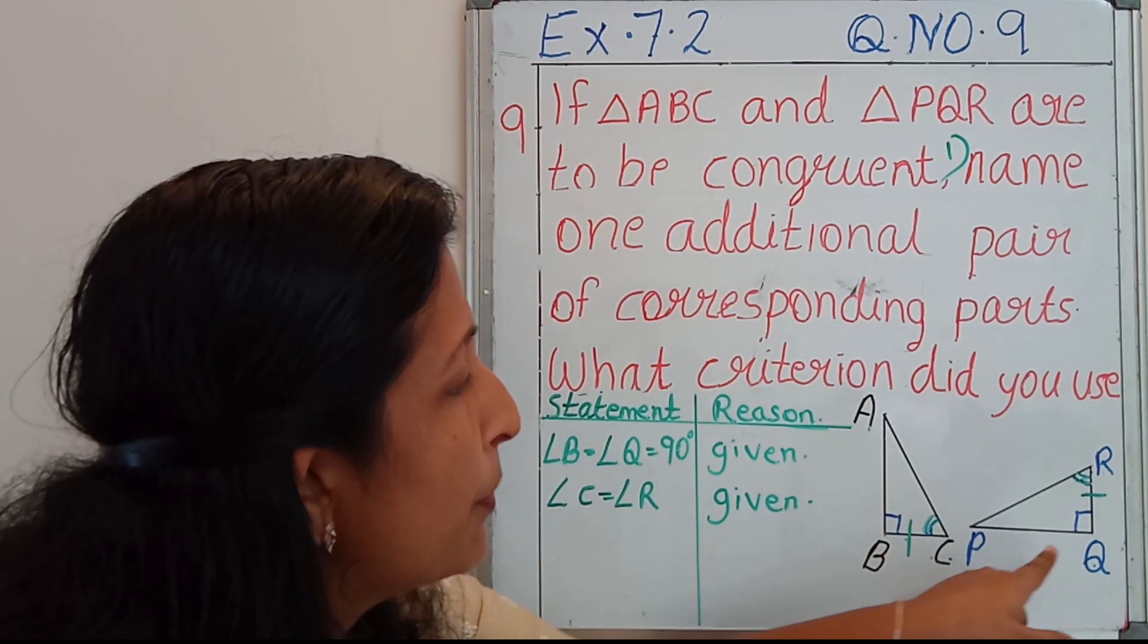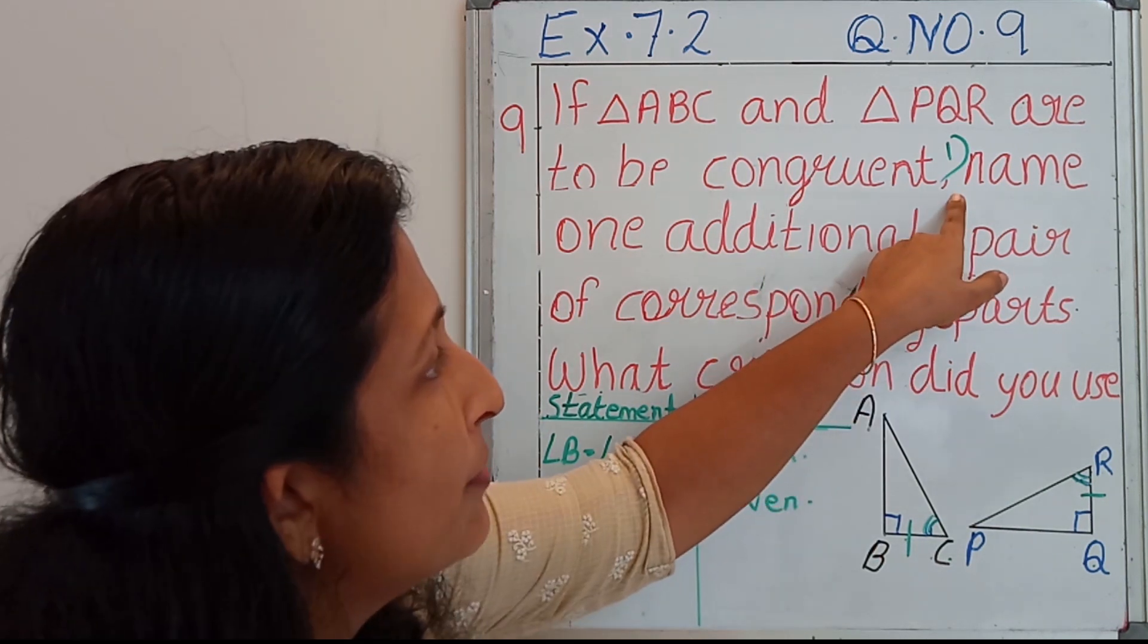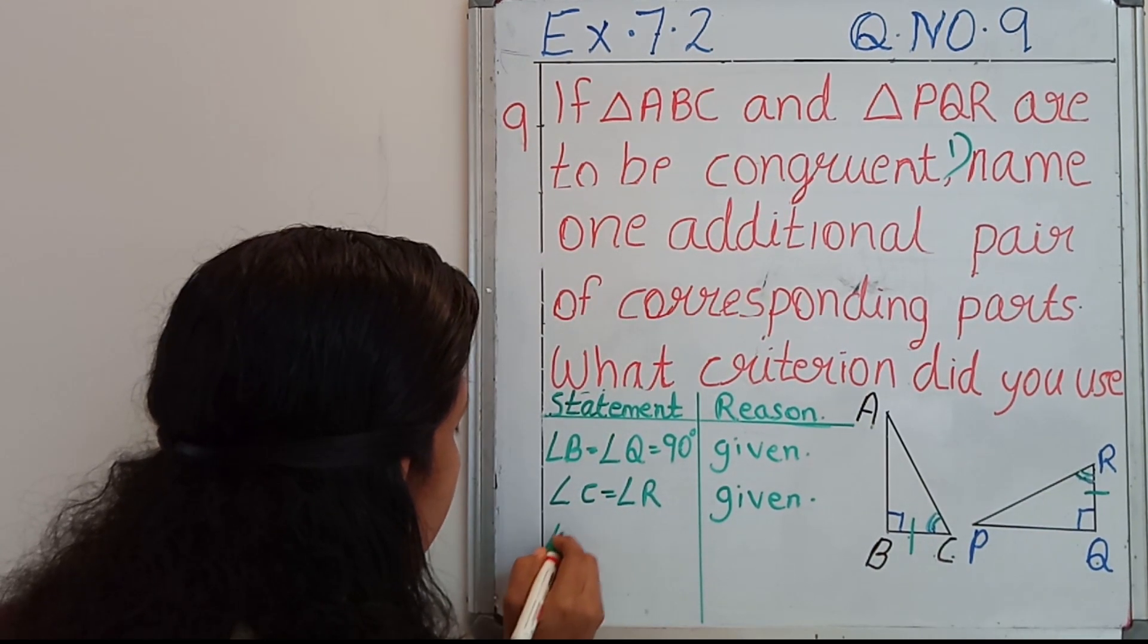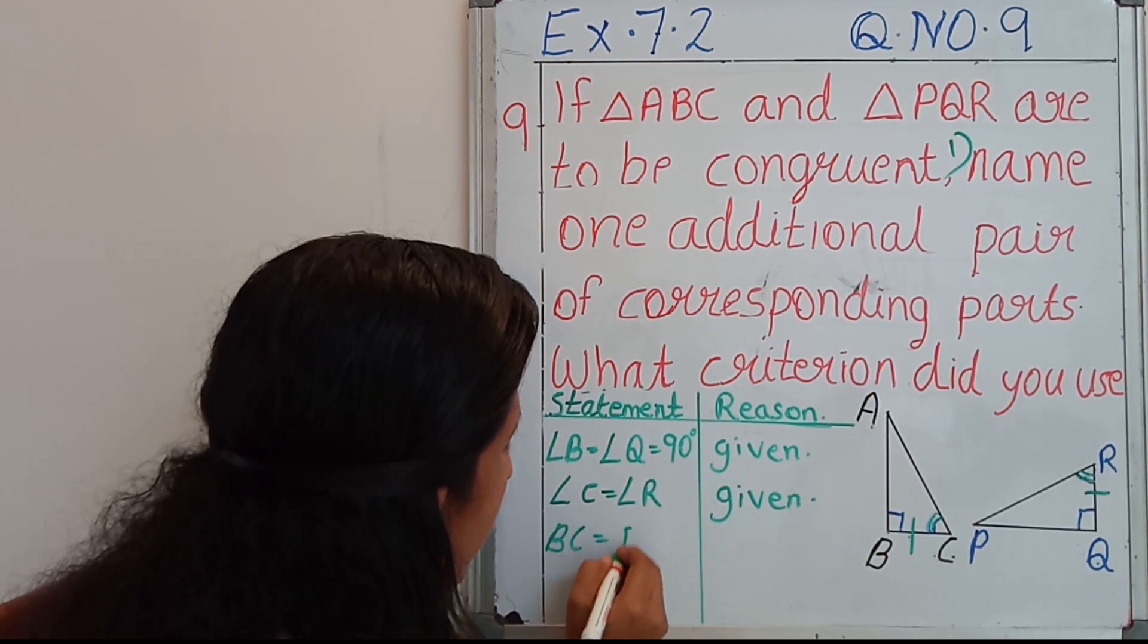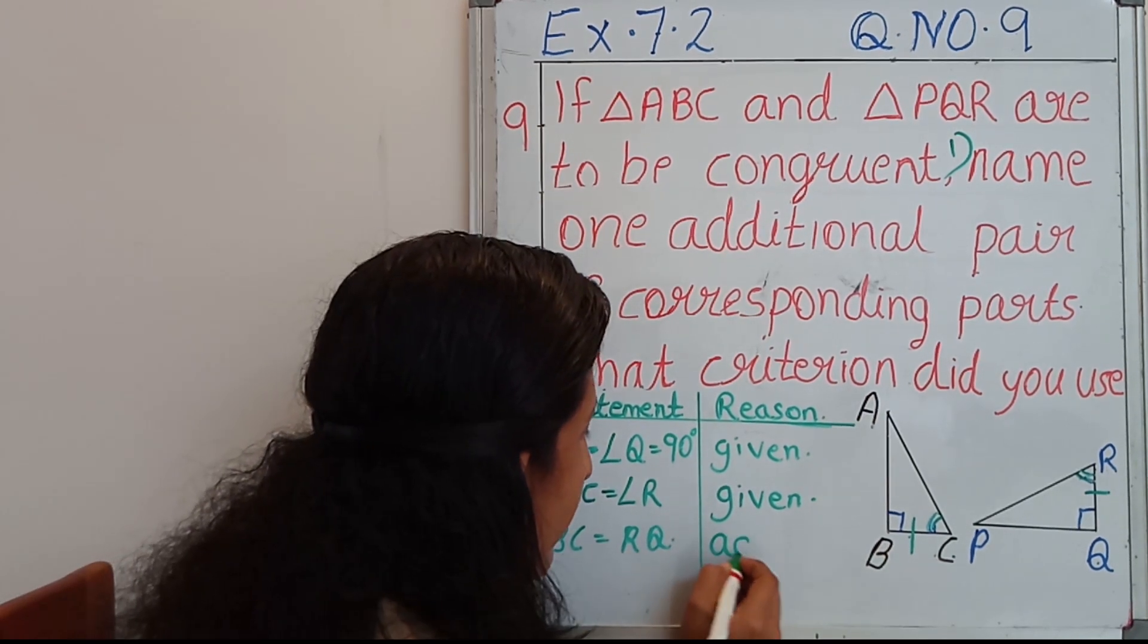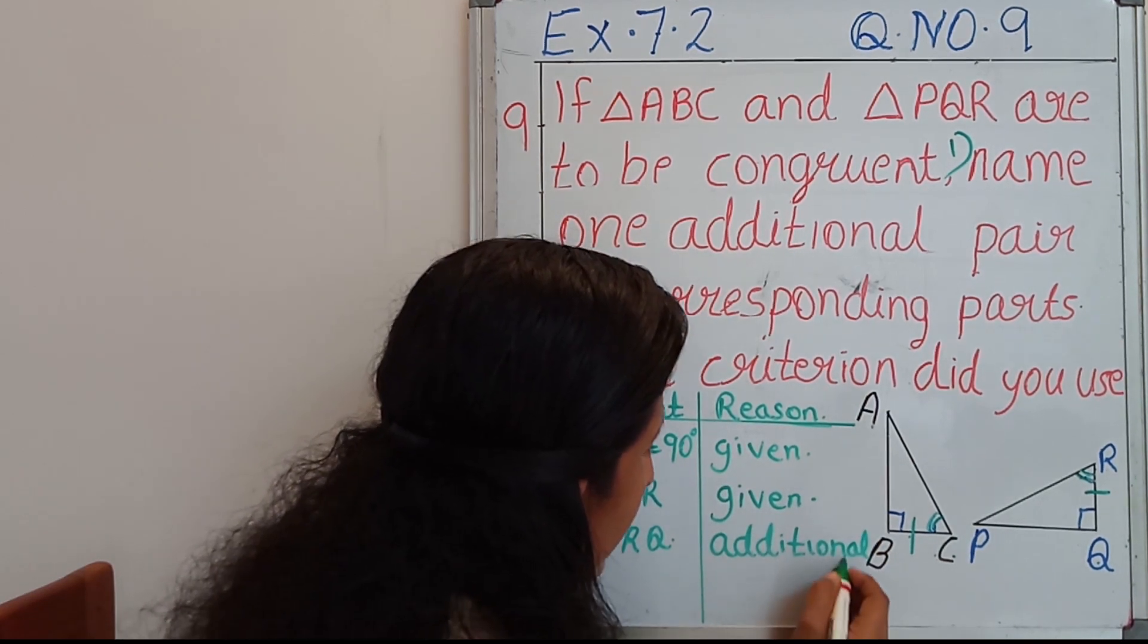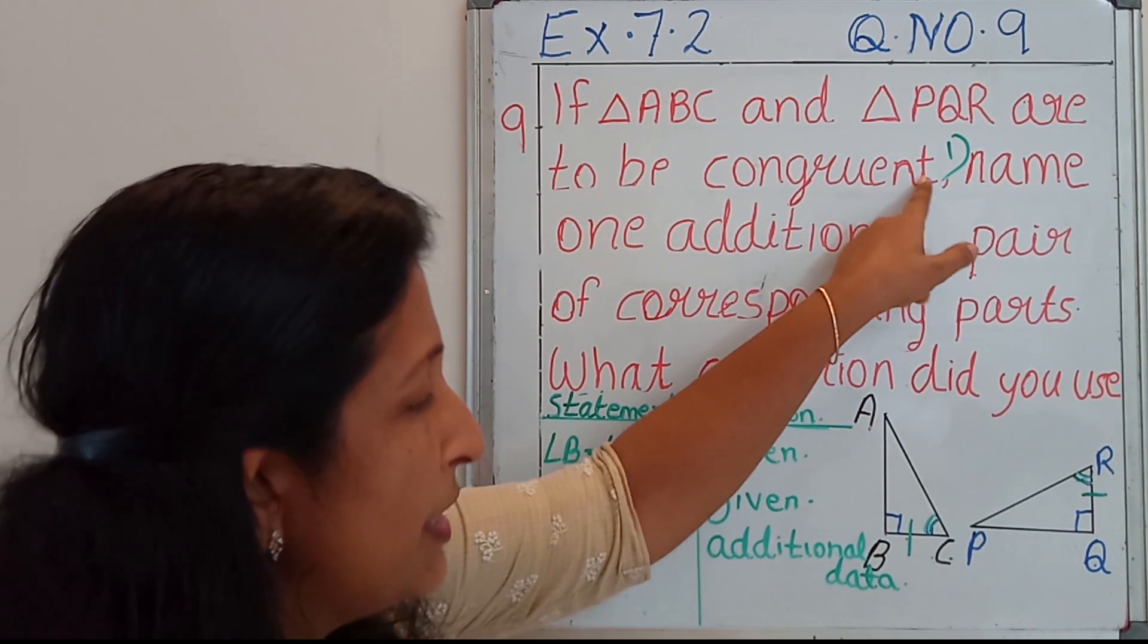Then additional data. What is the additional data? What is that we are including for proving the congruency of these two triangles? That is the answer for the first question. Then side BC equal to side RQ, side BC equal to side RQ, additional data. This is the answer for the first one.